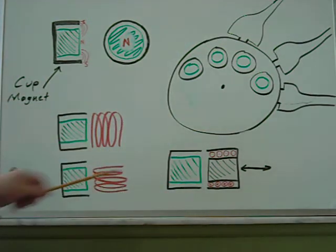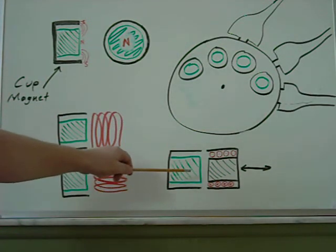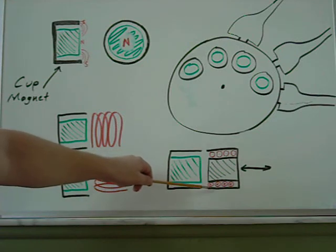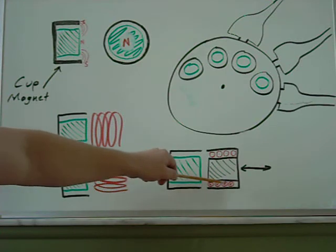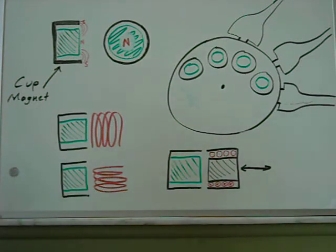As you can see, here's a cup magnet, and here is the coil pickup assembly. Here are the turns. You can see those have X's on them. Those have dots in the center. So that indicates the direction of current flow.